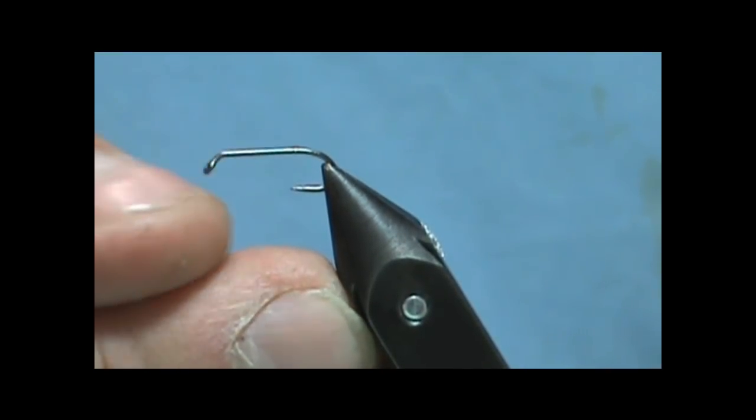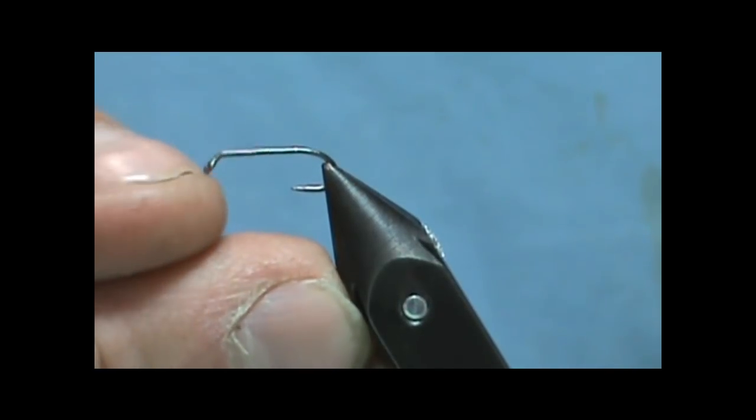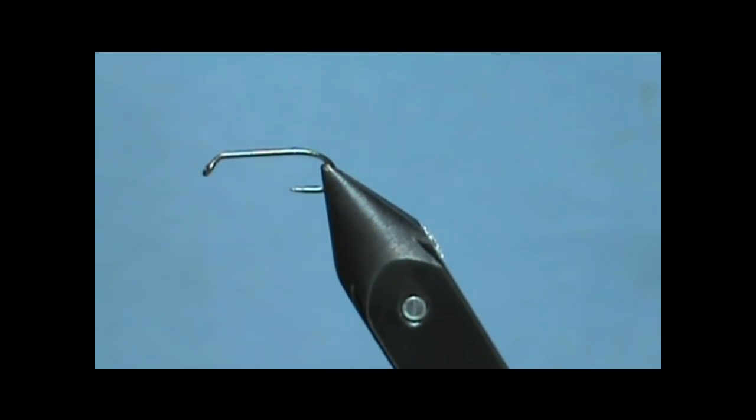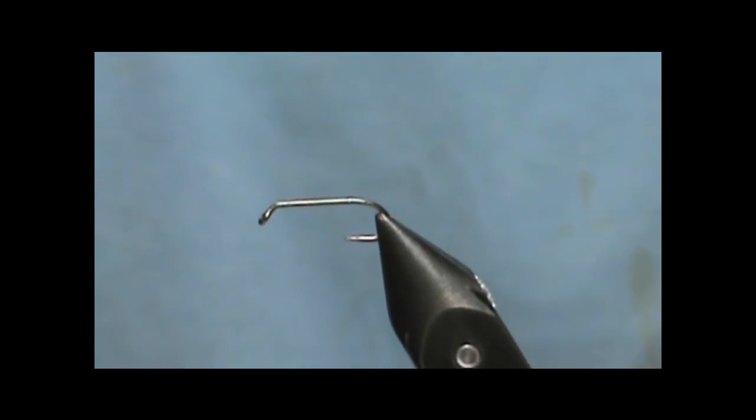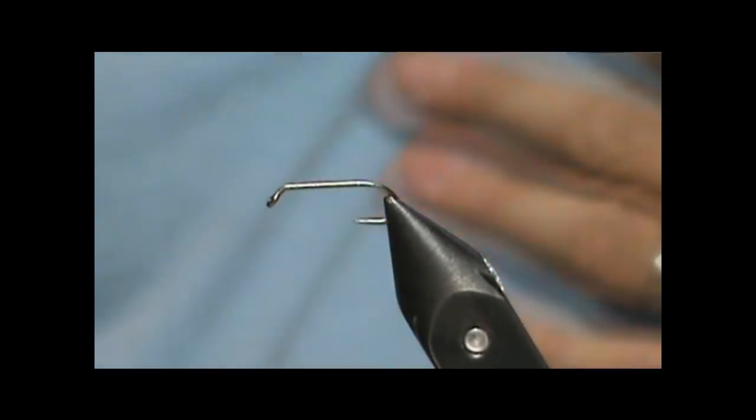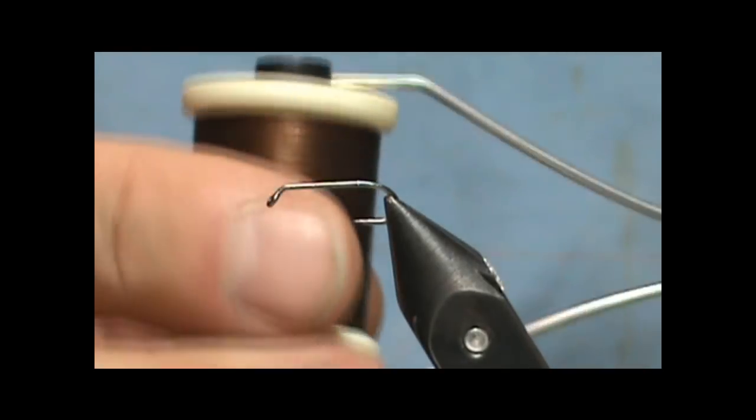The hook is in there nice and tight. You're not going to lose it. It can take hooks from size 24 or smaller all the way up through your largest size hooks. To start this fly I'm going to use brown thread.